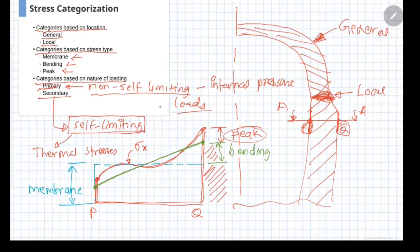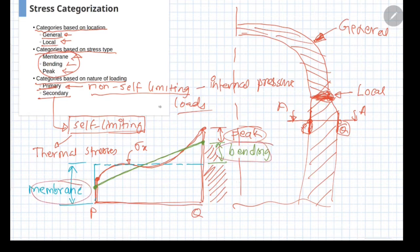To summarize: at any cross section, once you obtain the stress distribution, depending on the location you can classify stresses as general or local. Depending on the distribution, you can split them into membrane, bending, and peak stress components. And based on the loading type — whether self-limiting or non-self-limiting — you define them as primary and secondary stresses.